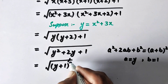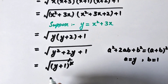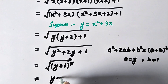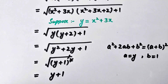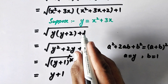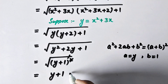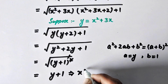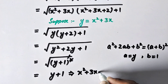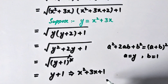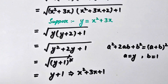The square root and the square cancel each other, leaving us with y plus 1. Recalling that we supposed y equal to x squared plus 3x, the expression becomes x squared plus 3x plus 1.